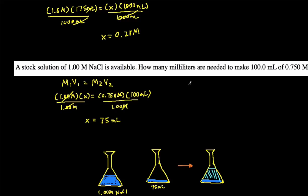And then we want a final volume of 100 milliliters. So that means we have to add 25 milliliters of water to that 75 milliliters of the 1.00 molar NaCl to get us to the final volume of 100 milliliters. And then by doing that, we're going to get a final concentration of 0.75 molar.